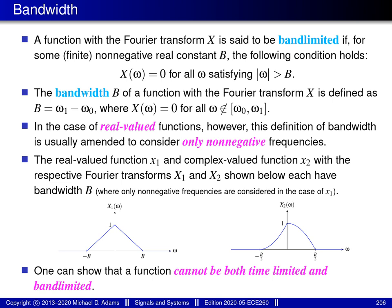I need to introduce the notions of band-limitedness and bandwidth of functions. A function with Fourier transform big X is said to be band-limited if, for some finite non-negative real constant b, the Fourier transform big X is only non-zero over an interval of finite length. The bandwidth b of a function is defined by identifying the interval from omega naught to omega 1 over which the Fourier transform is potentially non-zero, and defining the bandwidth to equal the length of that interval — that is, omega 1 minus omega naught.